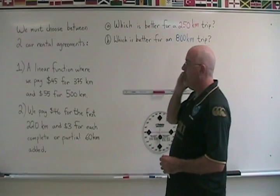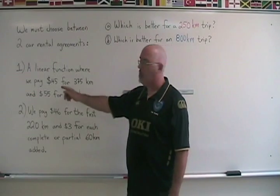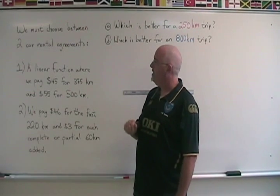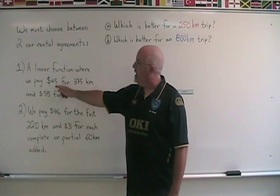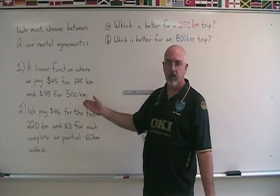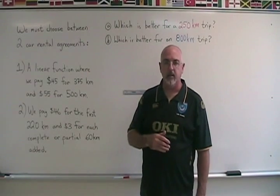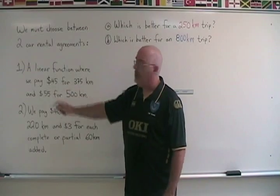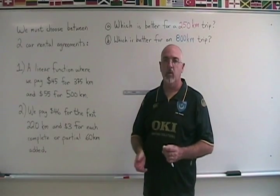Starting with the linear function, we have to decide which are our x-coordinates and which are our y-coordinates in this situation. The cost is dependent on the kilometers traveled. So we would put the kilometers traveled on the x-axis, and therefore these are our x-coordinates, and the 45 and 55 dollars are our y-coordinates.